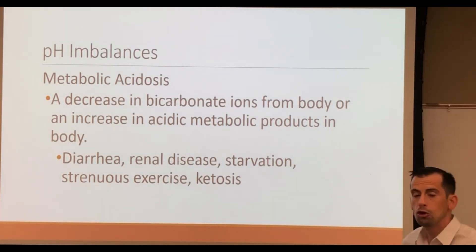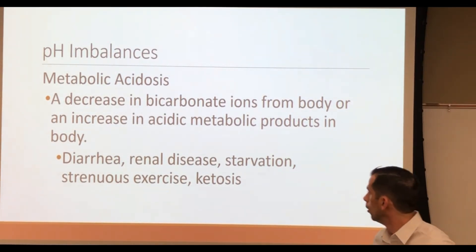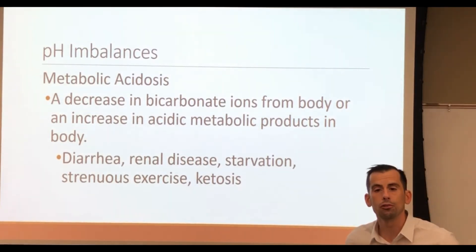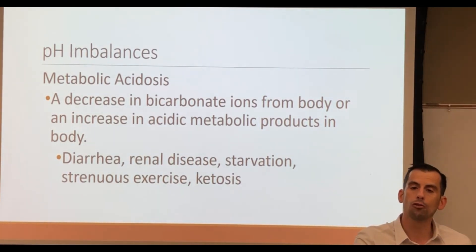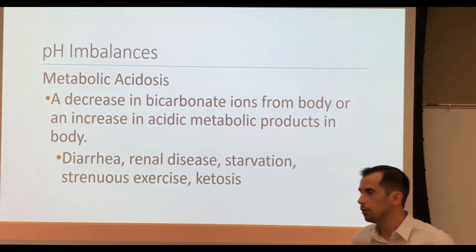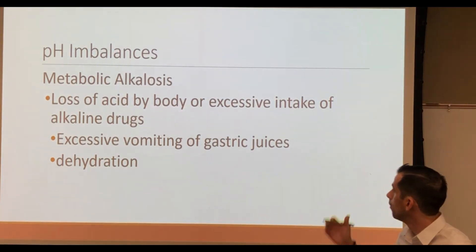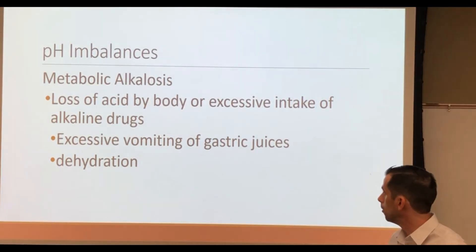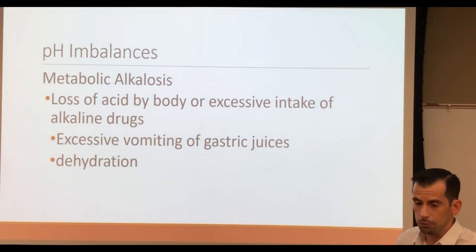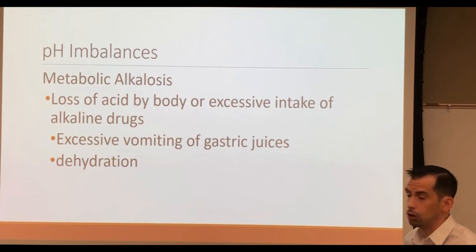On the other hand, you could be producing excess hydrogen ions — we see that in cases of renal disease, starvation, or strenuous exercise, where more hydrogen ions are spilling into the blood than during a normal state. Conversely, you could have a metabolic alkalosis, where you could be losing hydrogen ions through excessive vomiting or alkaline drug use.